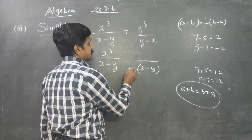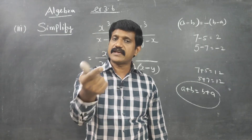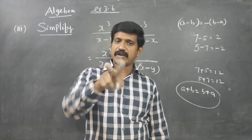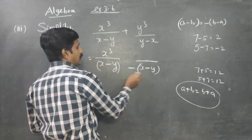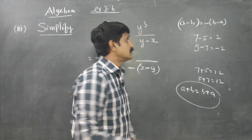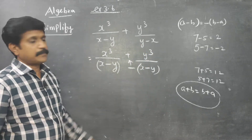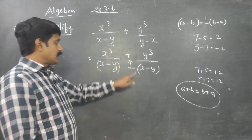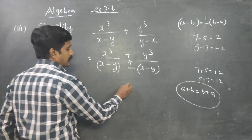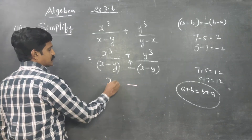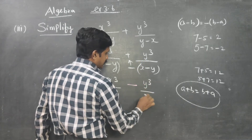Now, notice the extra minus symbol here. You can see that the second term has y minus x, but the first term has x minus y. So we can convert y minus x to minus of x minus y. Therefore: x cubed by x minus y, minus y cubed by x minus y.